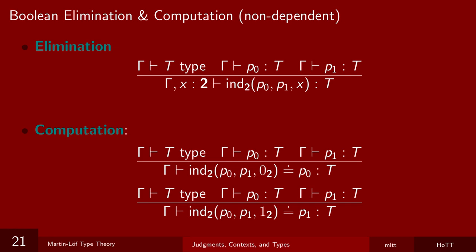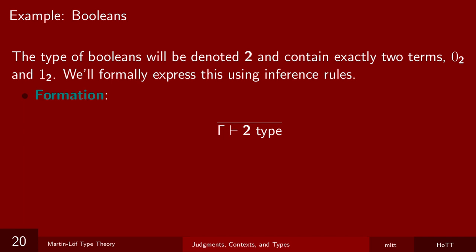Let's do another example. But before we do, let's revisit the formation. Gamma, again, is any context, including the empty context. So we're declaring this type into existence wholesale. It doesn't depend on any other types, and it isn't built out of previously defined types. Our second example is going to be a type construction, i.e. a way of combining existing types to form new ones.